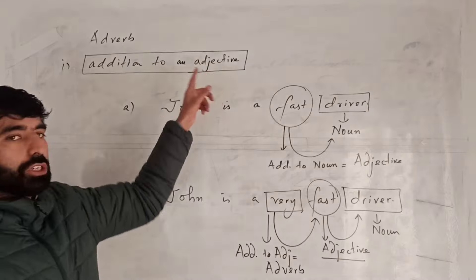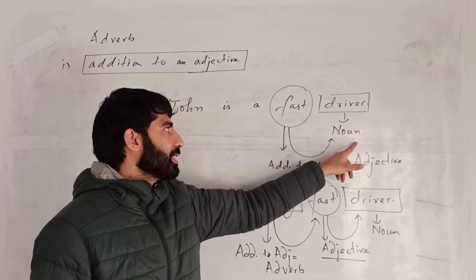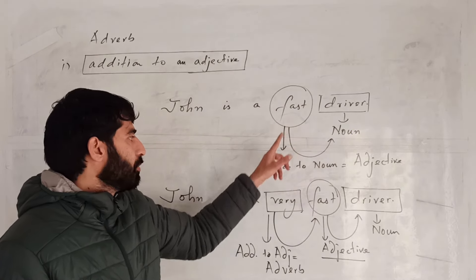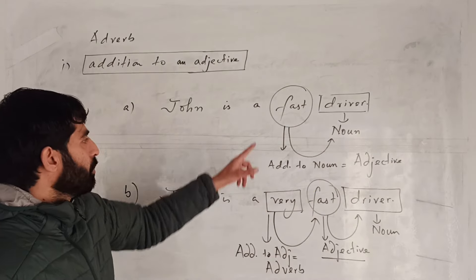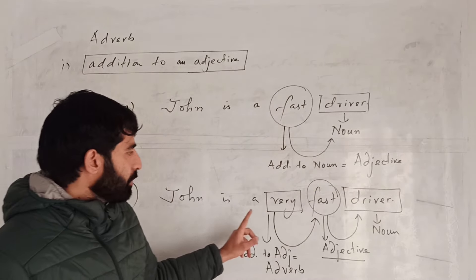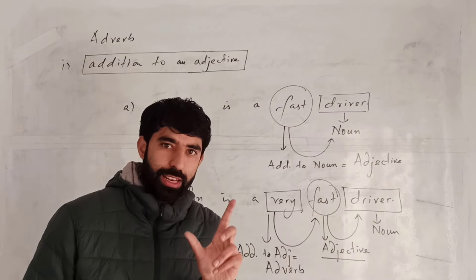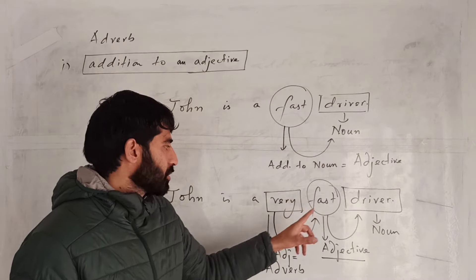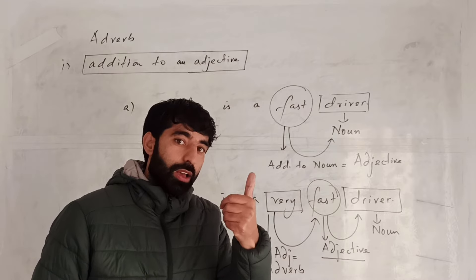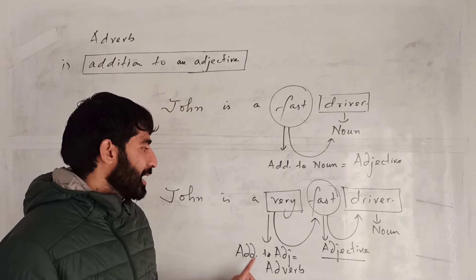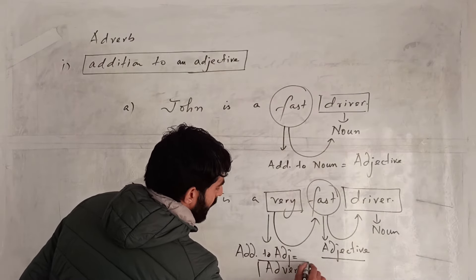Let us repeat: adverb as an addition to adjective. 'John is a driver' — driver is noun. 'John is a fast driver' — fast is an addition to noun, so it is an adjective. 'John is a very fast driver' — fast is adjective, and very is an addition to adjective. Addition to adjective is equal to adverb, so very is an adverb.